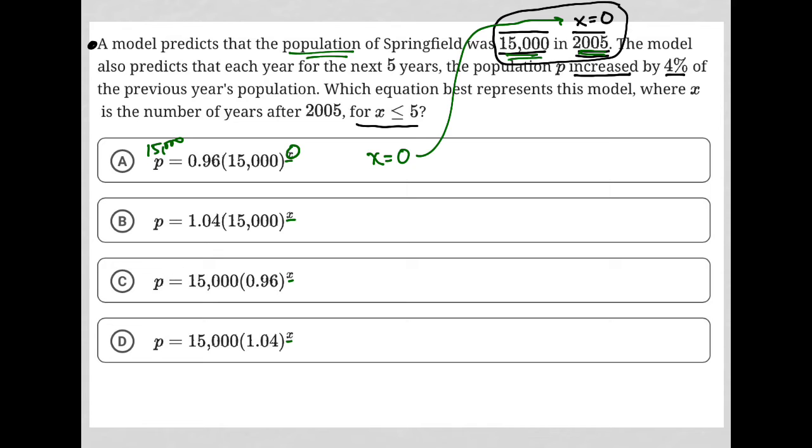We can see that for choice A, that has not happened. 15 to the 0 power is just 1, and 0.96 times 1 is not 15,000. So that is gone.